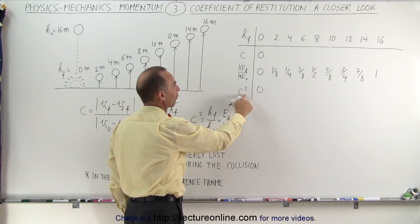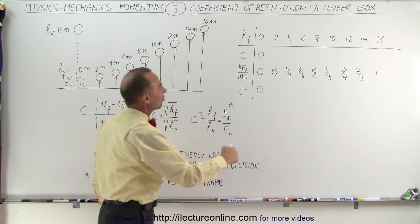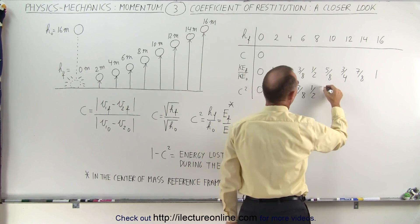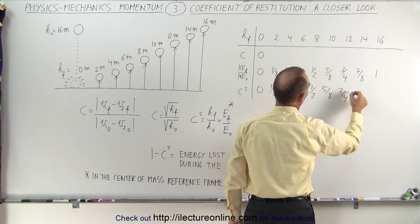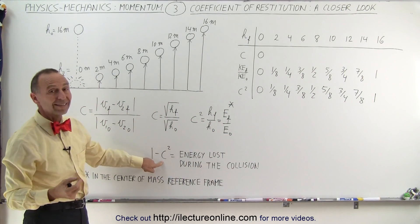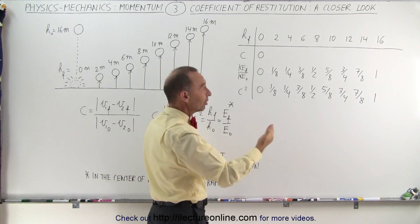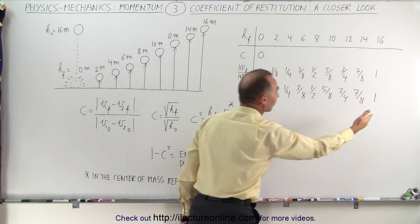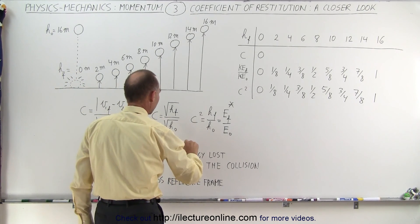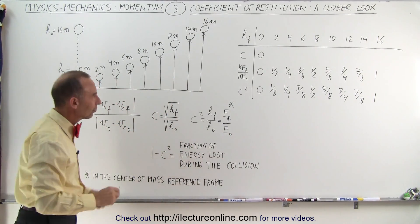The coefficient of restitution squared is equal to the ratio of those energies, so the values are: 1/8, 1/4, 3/8, 1/2, 5/8, 3/4, 7/8, and 1. Notice that 1 minus C² gives the fraction of energy lost in the collision. So 1 minus 0 equals 1 — all the energy is lost. And 1 minus 1 equals 0 — none of the energy is lost. That is the fraction of energy lost during the collision.